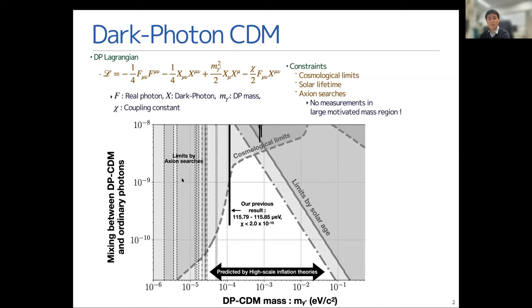There are some limits, the indirect limits from the axion searches. However, there are still a lot of space here in the middle of this ultralight dark matter part.